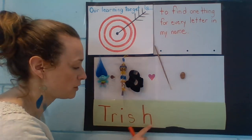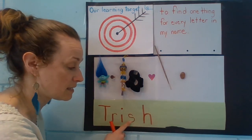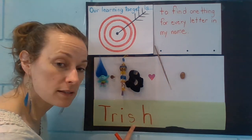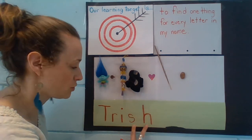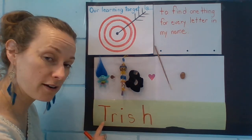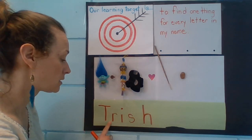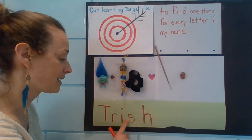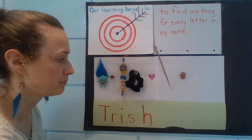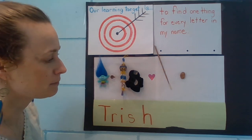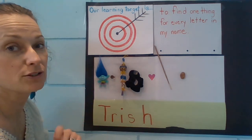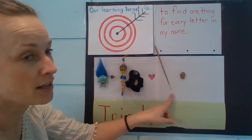So those two letters S and H are going to work together to make a different sound in my name, and the sound they make is 'shh.' So far it says T-R-I-SH — Trish. But I'm doing my full name. My full name is Trisha, so I have two more letters to go. I have another I.